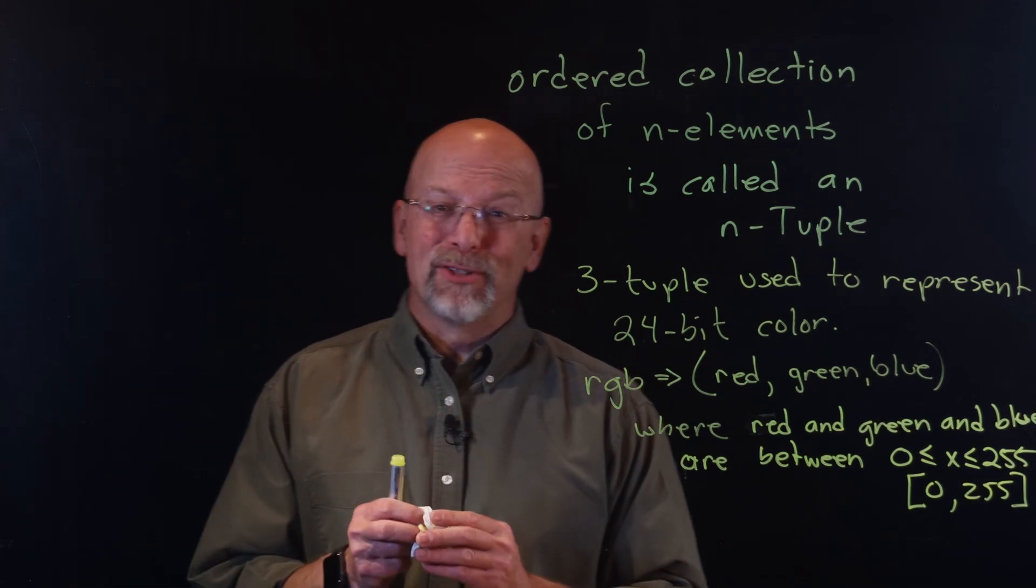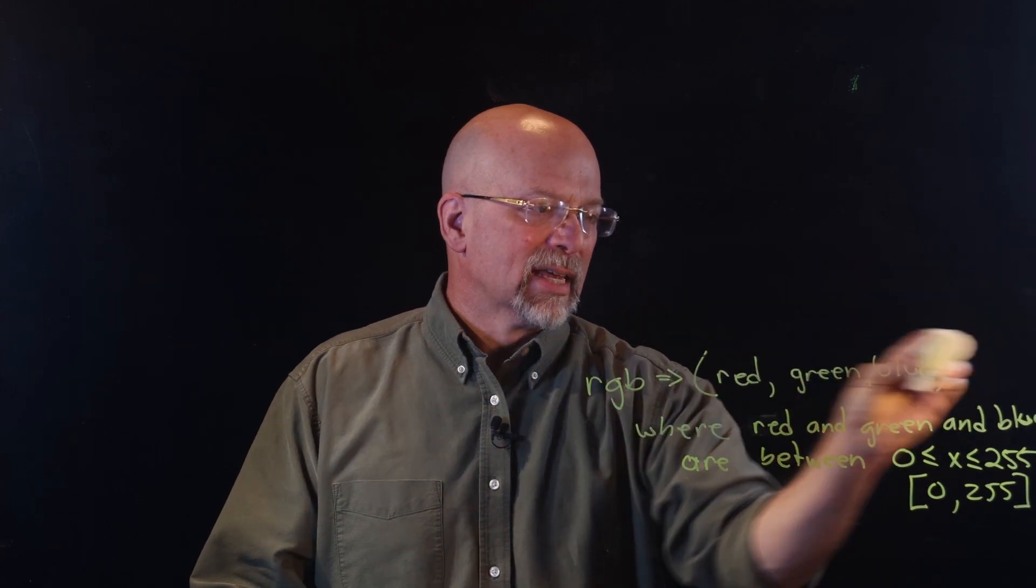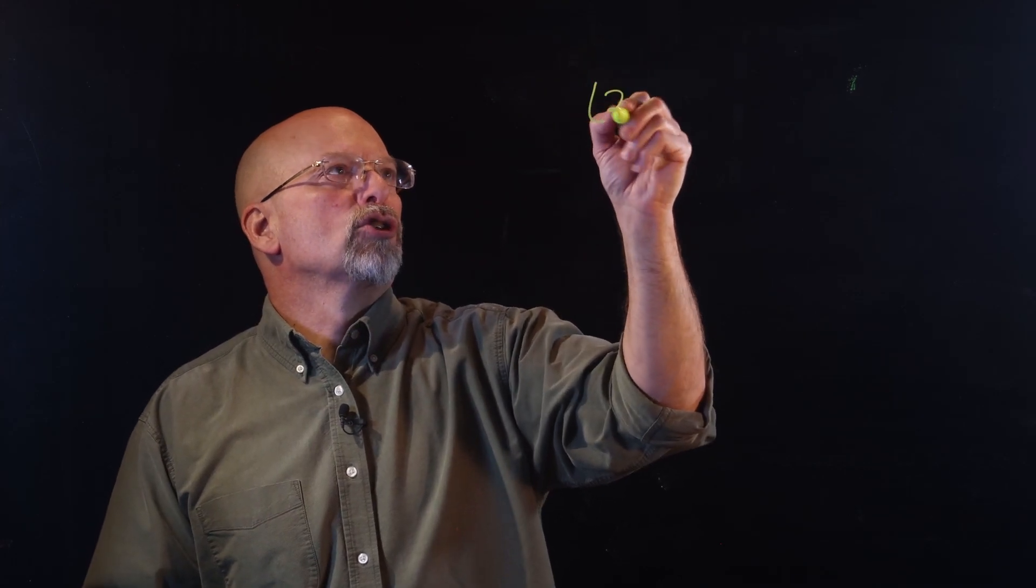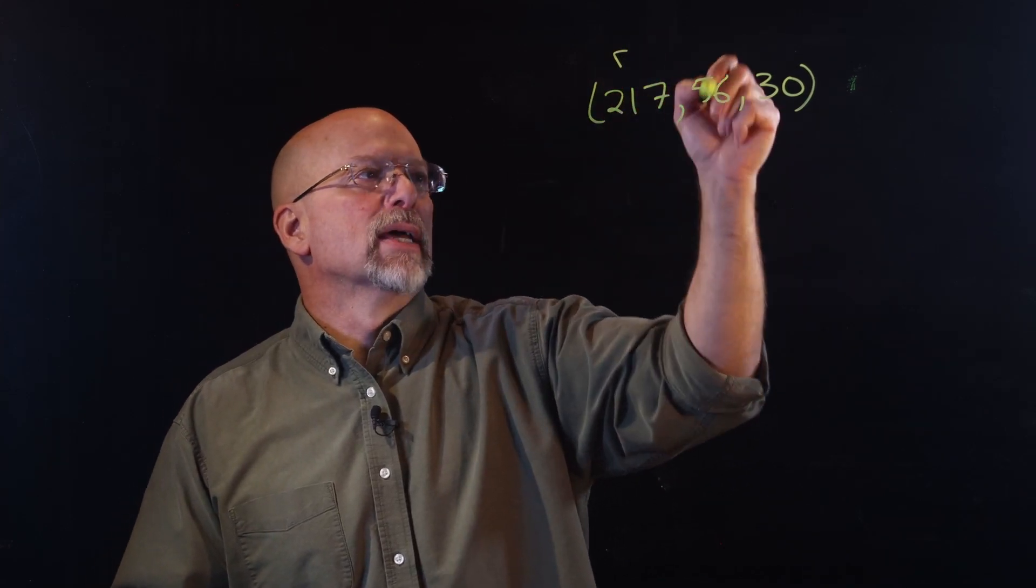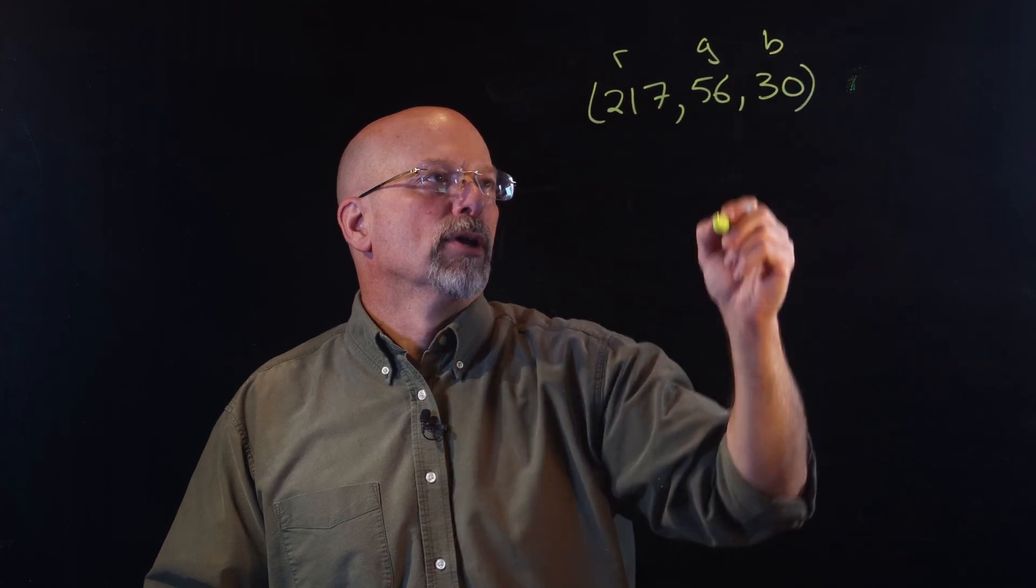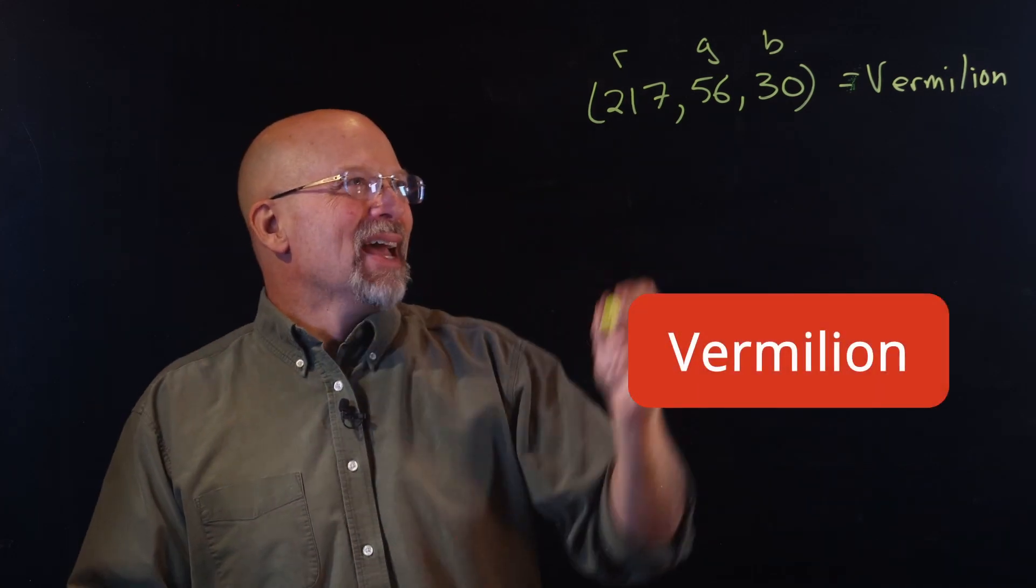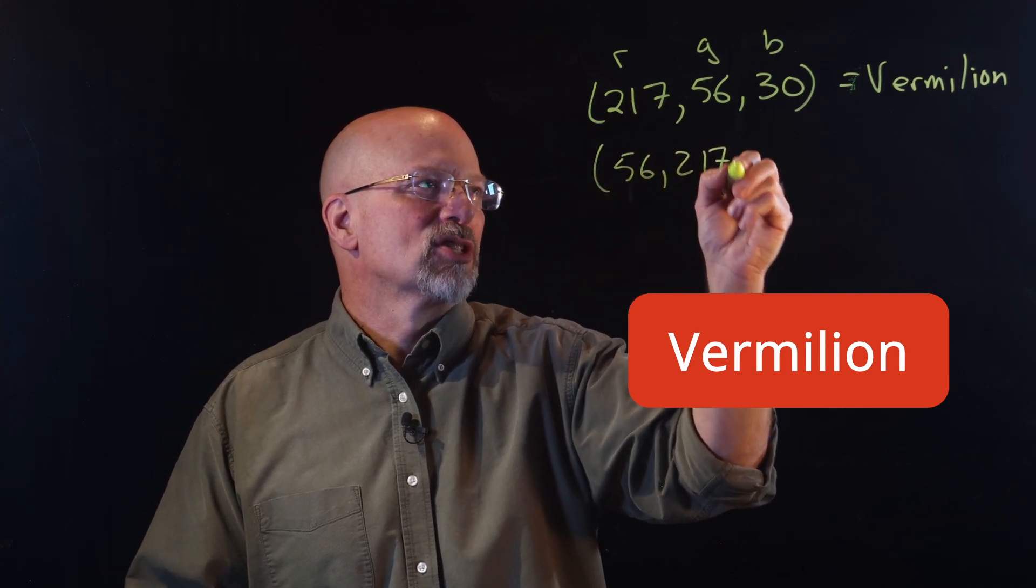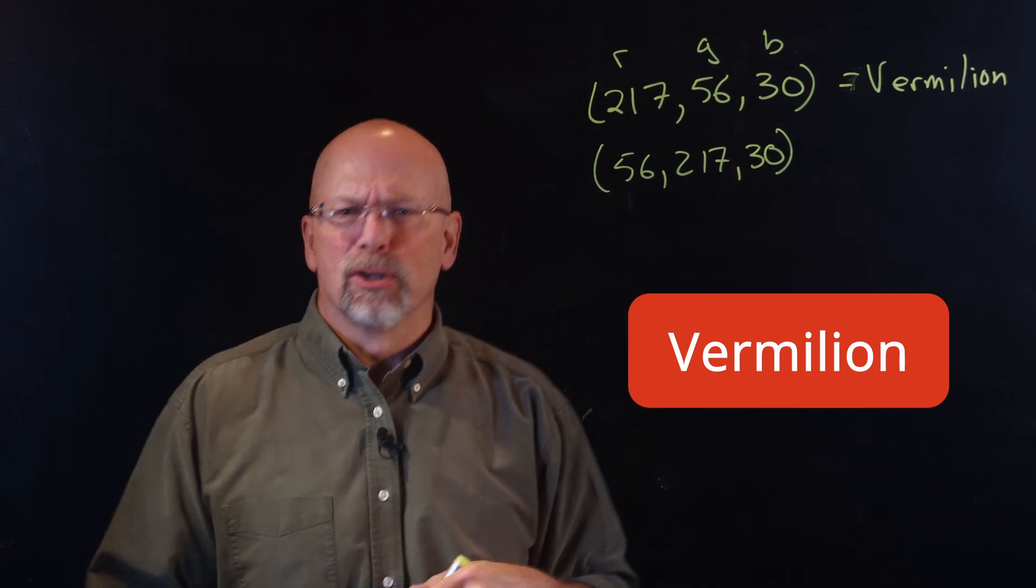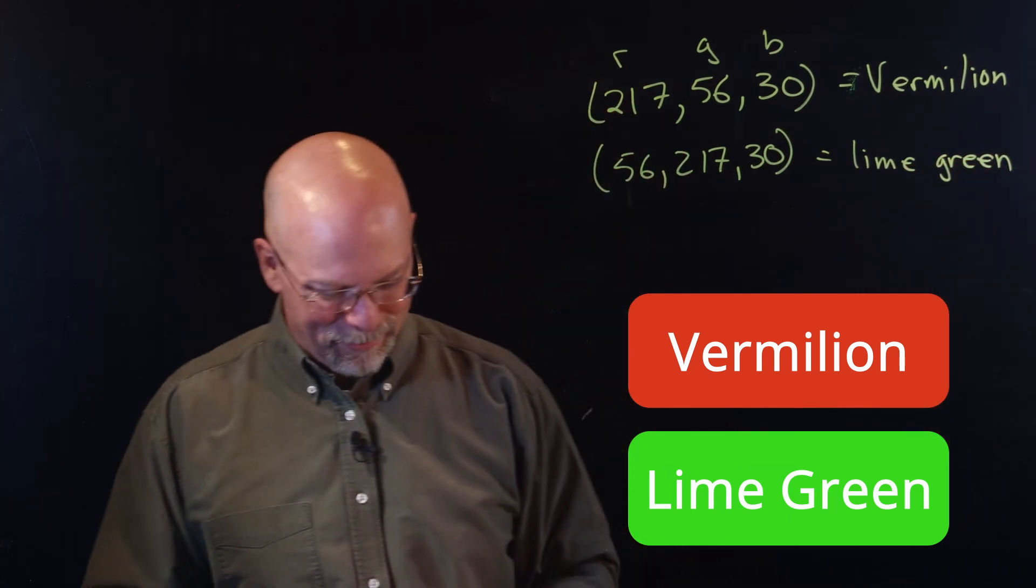For example, I may have two different colors if I simply swap the elements that are in that sequence. For example, I may have the color (217, 56, 30). So 217 for red, 56 for green, 30 for blue. Well, this is equal to a color we call vermilion. If I have accidentally swapped a couple of these values and instead display (56, 217, 30), just simply swapping those two, shouldn't make a difference, right? Now we get lime green, a much different color.